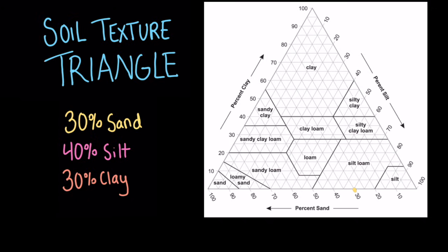We want to draw a line from this point to the side of the triangle that this arrow is pointing to. The arrow is pointing towards the clay side, so we draw the line from the 30% sand mark through the triangle to the clay side, like this. And by drawing this line, we already know that our soil sample will fall into a category along this line.